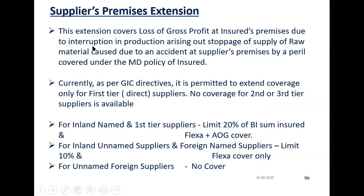This covers loss of profit at the insured premises due to interruption in production arising out of a stoppage of supply of raw material, caused due to an accident at the supplier's premises by a peril covered under the material damage policy of the insured. As per GIC limits, it can be given up to 20% for named first-tier suppliers, with cover restricted to FLEXA plus AOG. For unnamed suppliers, the limit is 10% of BI sum insured and cover is restricted to FLEXA only, no AOG. For unnamed foreign suppliers, there is no cover at all.